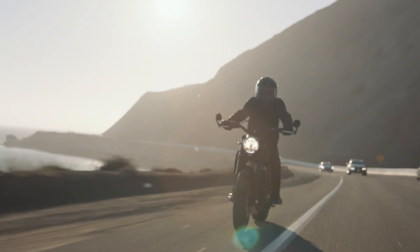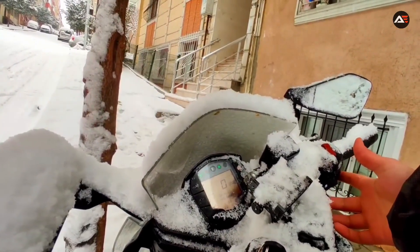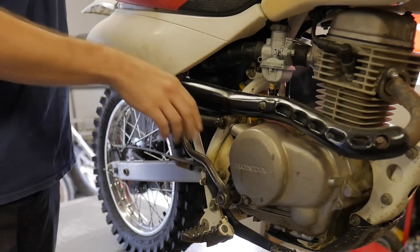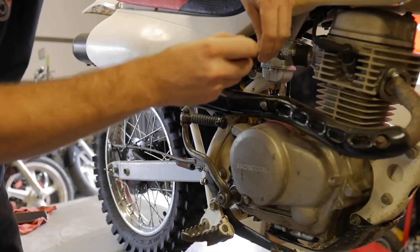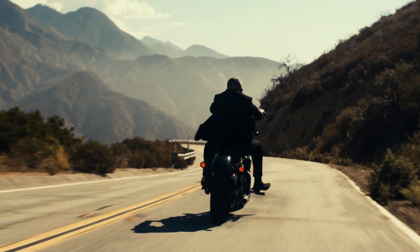A carburetor doesn't know if you're riding up a mountain or starting the bike in freezing cold. It'll just keep doing its thing, even if it's the wrong thing for the moment. So while it may feel like riding with a loyal old friend, the real question is, can loyalty keep up with modern demands?